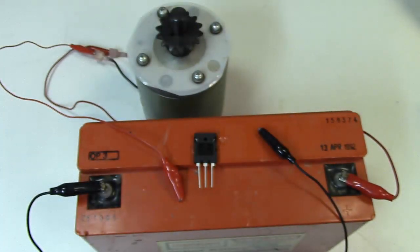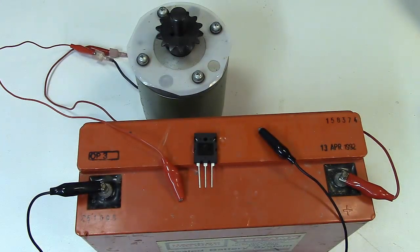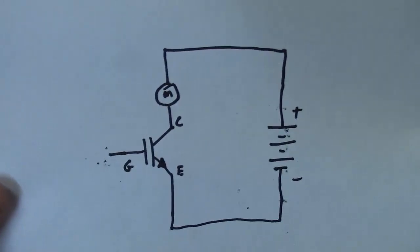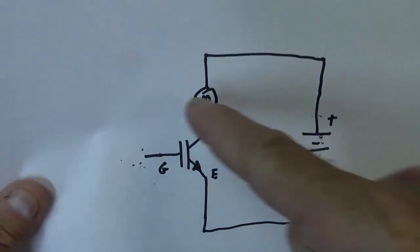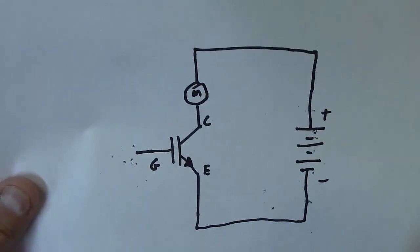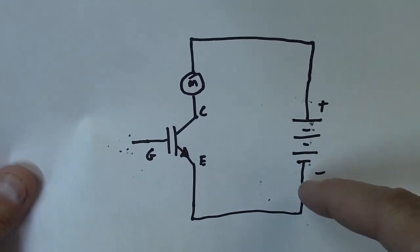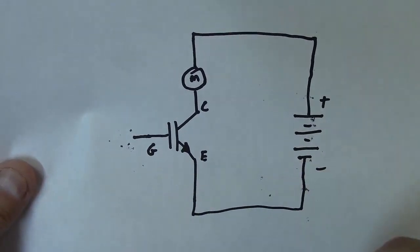So let's hook it up real quick. The way we're going to hook it up is basically this way. We're going to take the IGBT, hook the collector to our motor, and the motor is going to go to the positive terminal of a 12 volt battery. And then we're going to hook the emitter to ground.